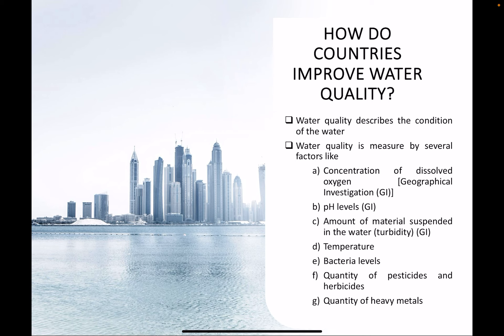Bringing ourselves back to the GI component of the IC task — how do you describe water quality? How do you tell someone this water is clean? You need clear indicators. Some of the tests we used to benchmark clean water include dissolved oxygen, pH level, and turbidity. These are all good indicators you can use when trying to describe water quality.